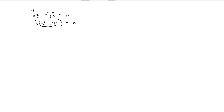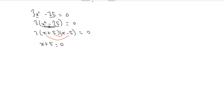Looking at x squared minus 25, we can again see that is the difference of two squares. So that is the same as x plus 5 times x minus 5 equals 0 — there's no x term, so x terms from the brackets cancel out. This gives us x equals minus 5 and x equals 5.